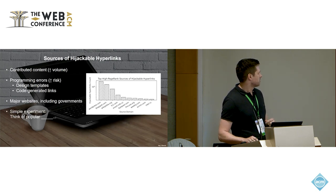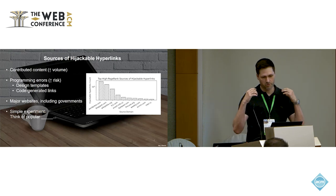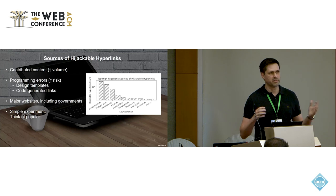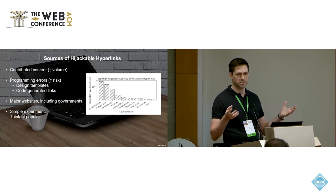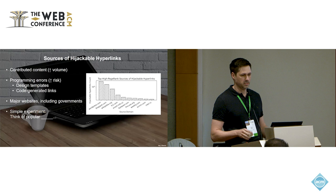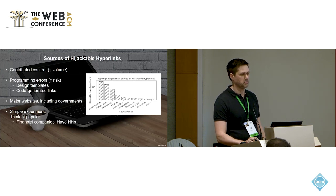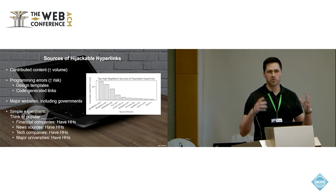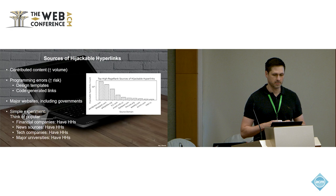I mentioned that governments have these issues, but I wanted to describe how pervasive this problem is without singling anyone out. The best way I can put it: you probably have a logo of a company producing hijackable hyperlinks on you right now. You don't have to think very far — just think of a few financial corporations, you'll find one; news sources, tech companies, major universities — try three and you'll find one in our dataset.